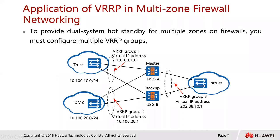When applying VRRP in multi-zone firewall networking to provide dual system hot standby for multiple zones, you must configure multiple VRRP groups on each firewall. Since firewalls are stateful, they require forward and reverse packets to pass through the same firewall. To meet this requirement, the status of VRRP groups on a firewall must be the same — all VRRP groups on the firewall must be in the master state.